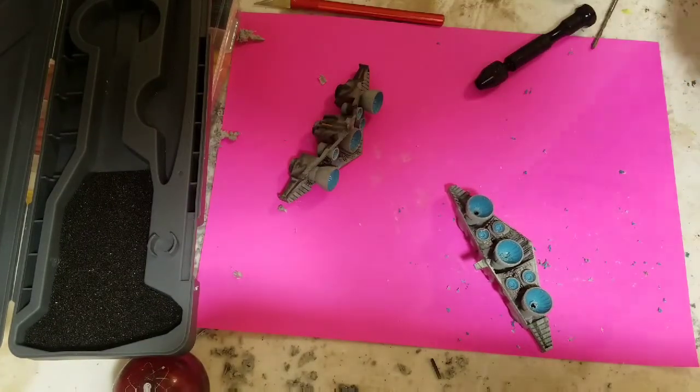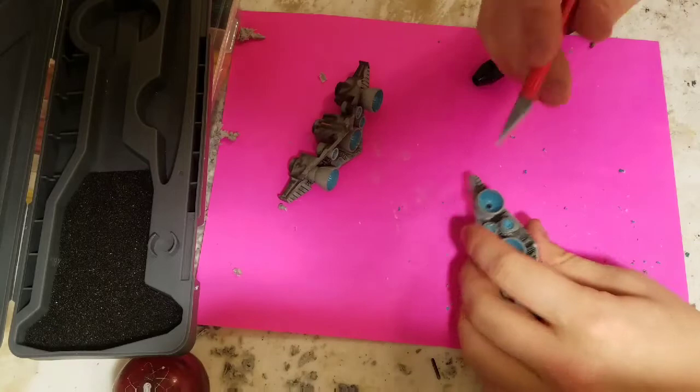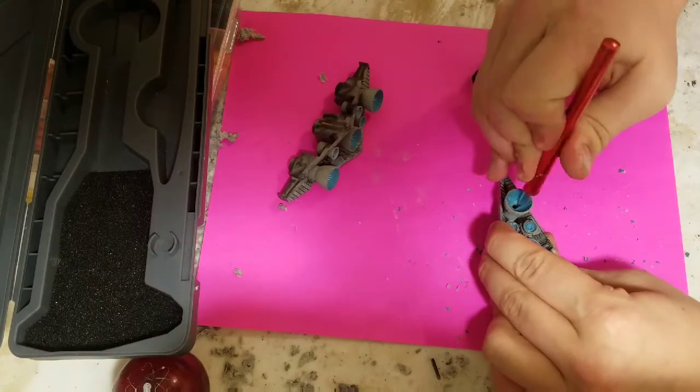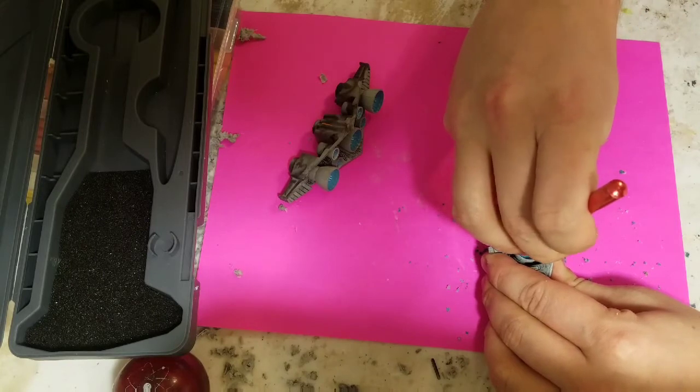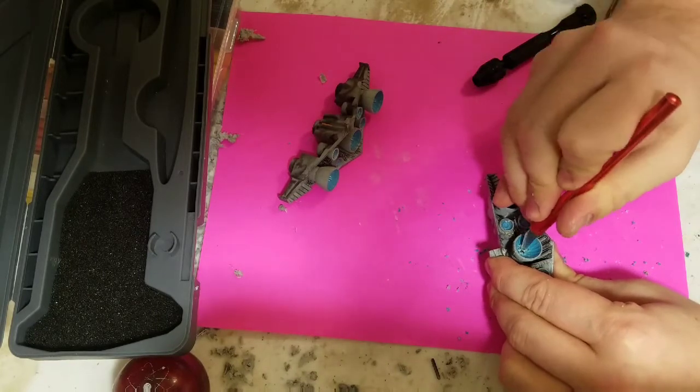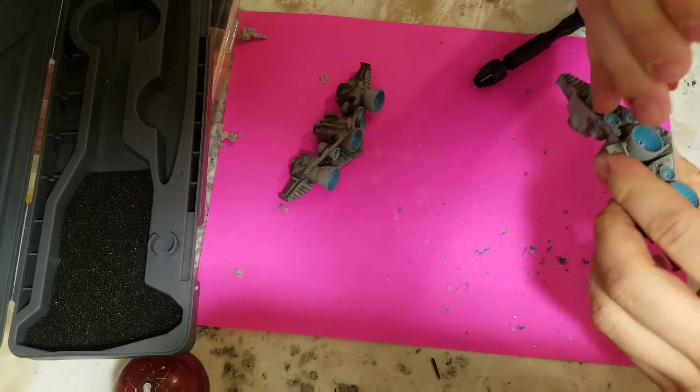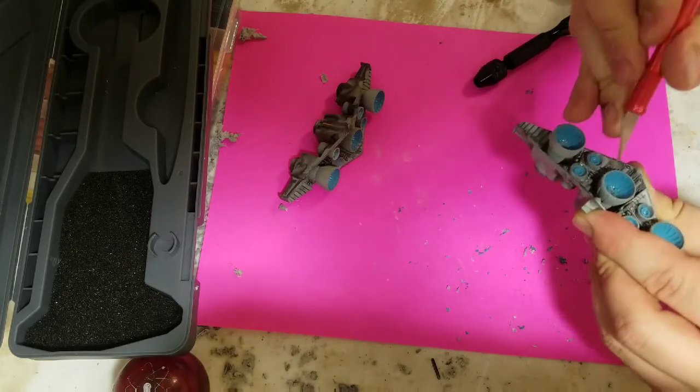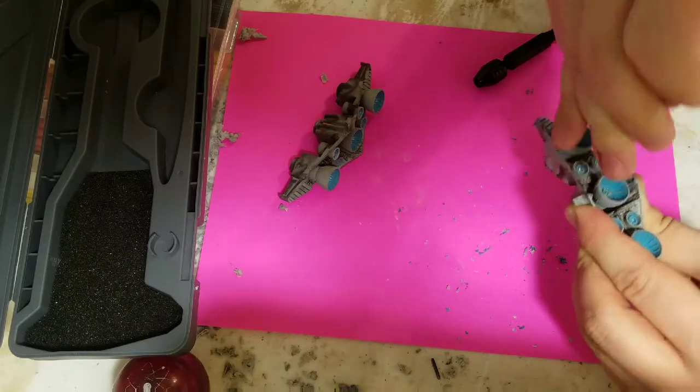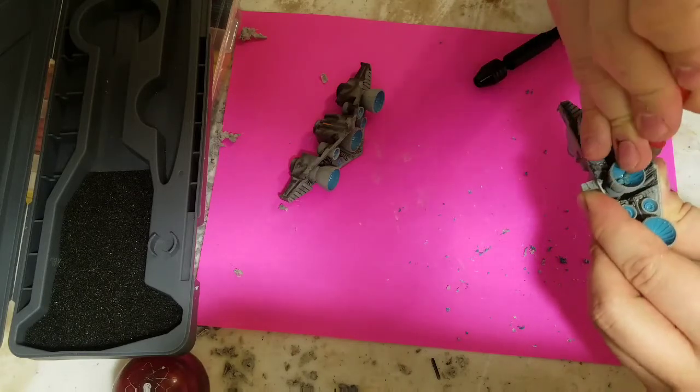After we've drilled out the three holes, take your hobby knife and clean up the remnants around the edge. Make sure you get a nice clean hole with nothing else on the engine cone. Don't worry if you take a little extra paint off, as you can always touch up the paint before adding a gloss coat.